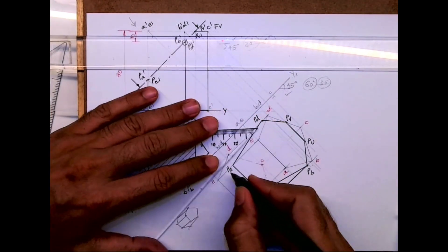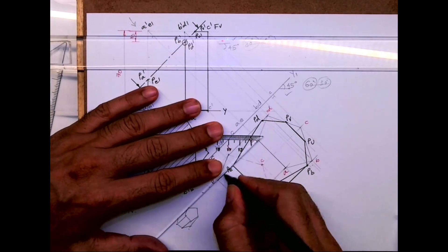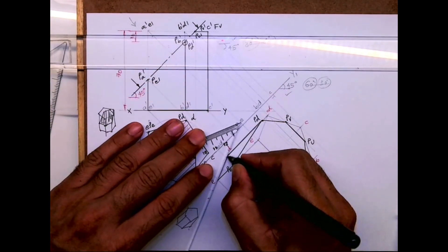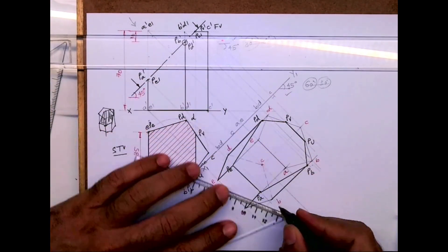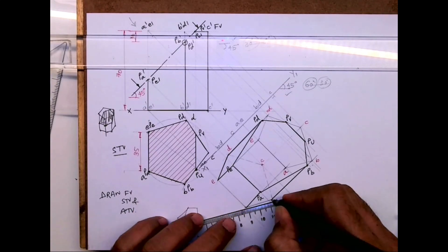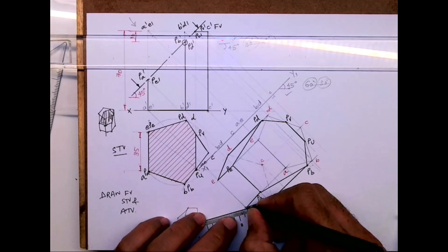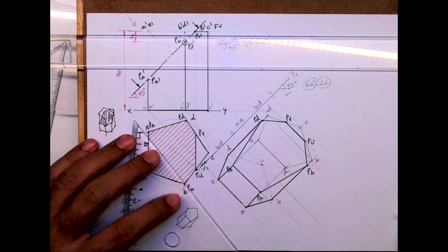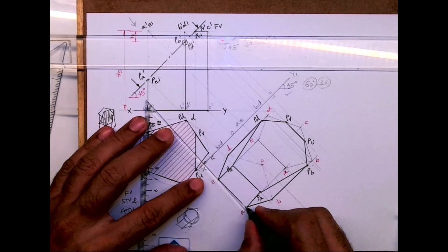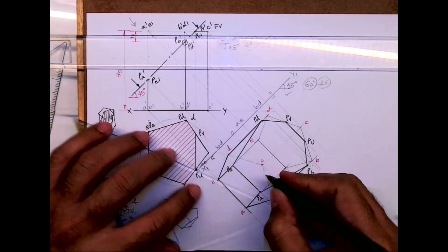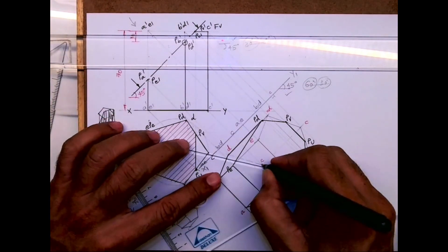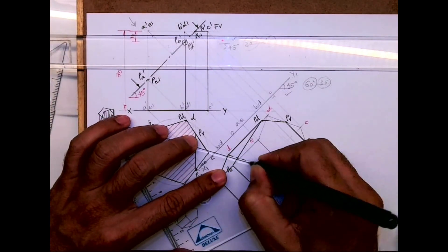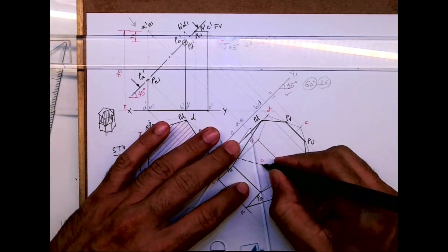Now I will draw the remaining part. The inside portion will be shown as dotted lines.